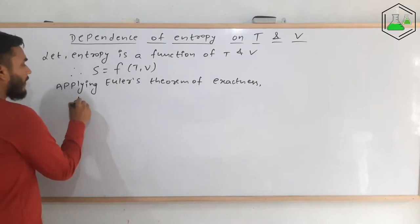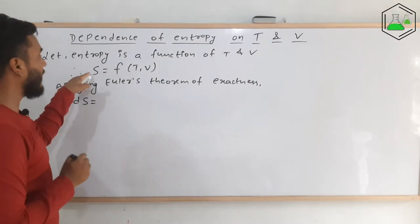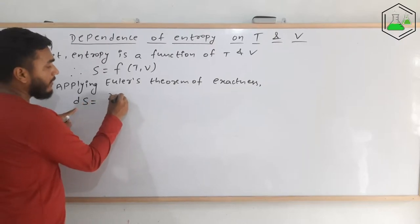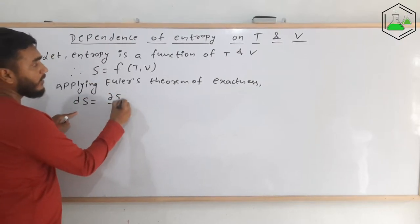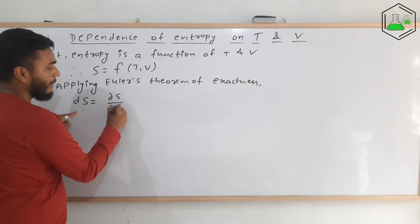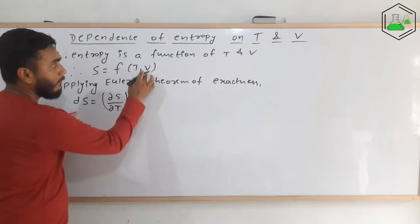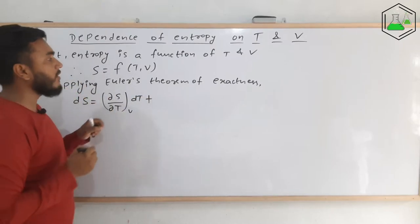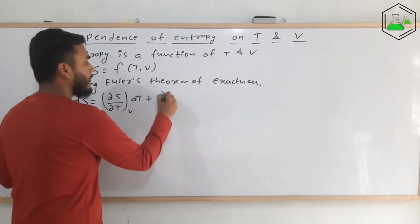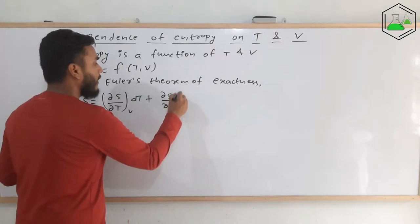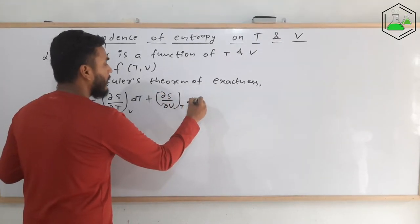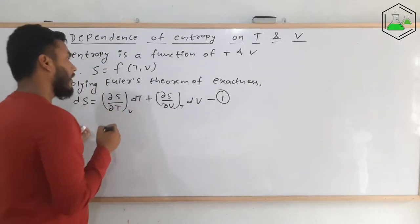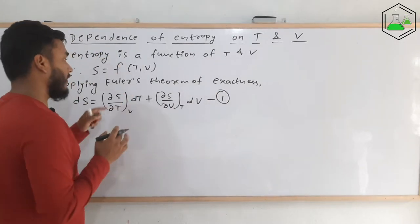According to Euler's theorem of exactness, we take the full derivative of the left-hand side: dS = (∂S/∂T)_V dT + (∂S/∂V)_T dV. This is equation number one. In the required final expression, the terms dT and dV appear but their coefficients will be replaced by other quantities that we are going to derive.